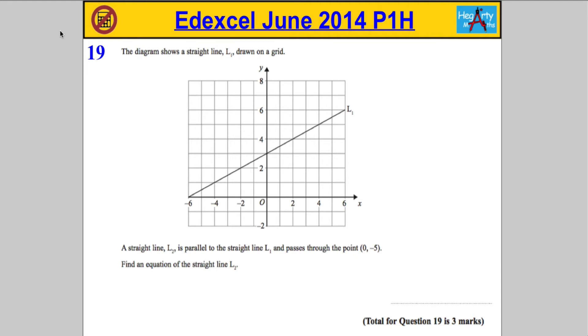Question 19. The diagram shows a straight line L1 drawn on the grid. A straight line L2 is parallel to L1 and passes through (0, -5). Find the equation of the straight line L2.